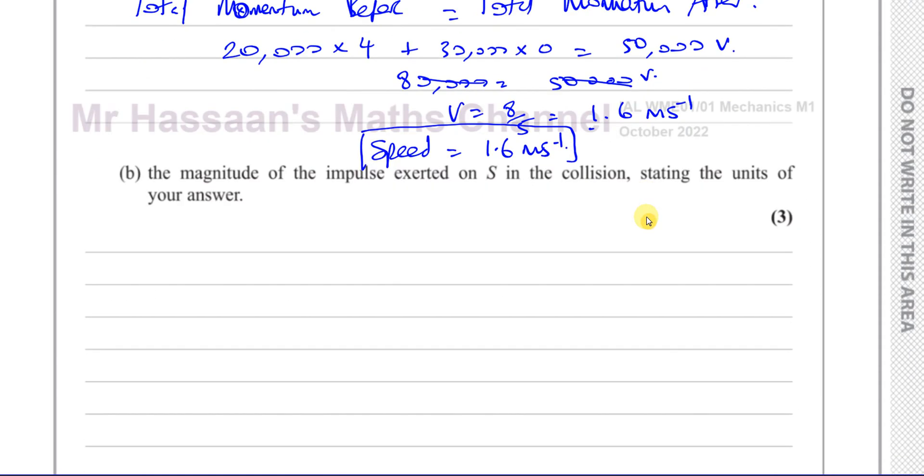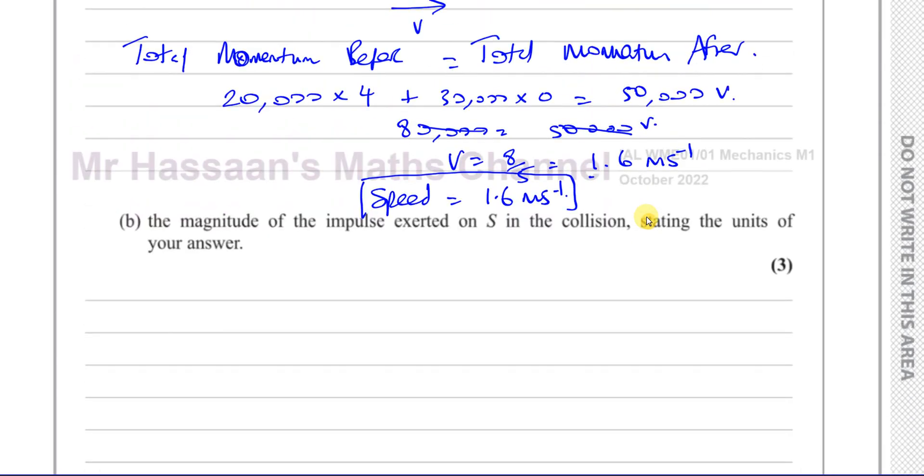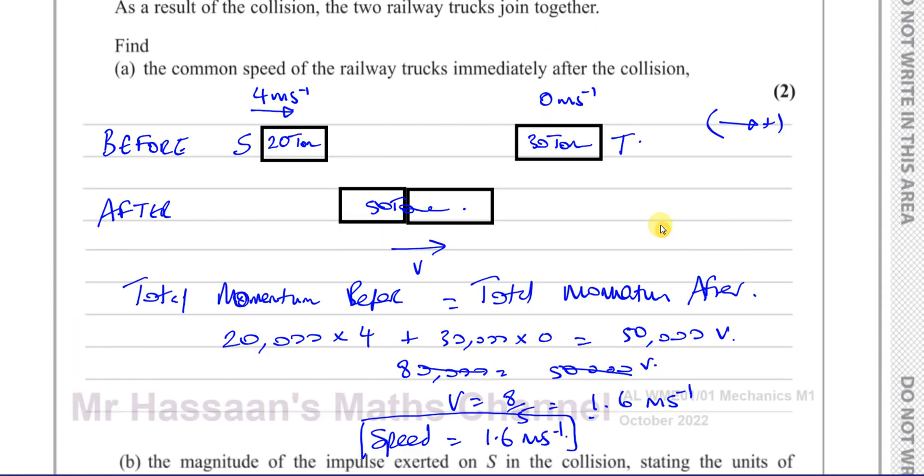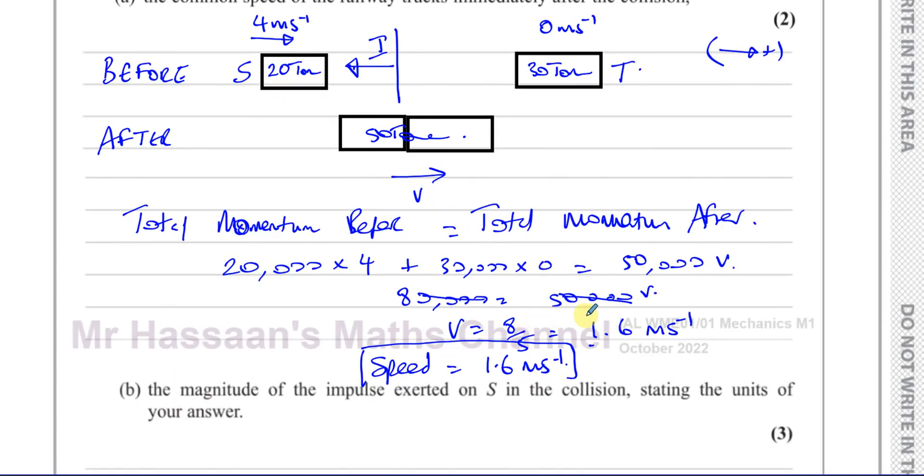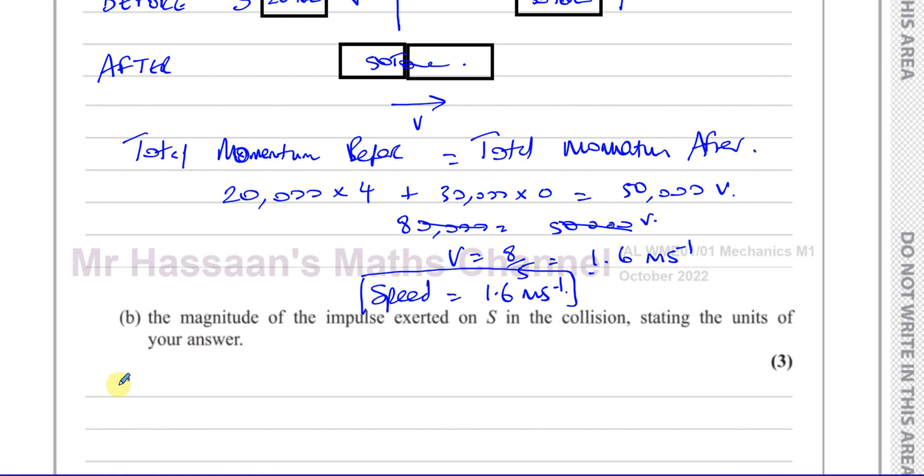Now, then it says, the magnitude of the impulse exerted on S in the collision, stating the units of your answer. So the impulse exerted on S is going to be in this direction. And it's going to be, the impulse is the thing which basically causes the motion of S to change. So if we think about what S was before the collision, if we consider S,